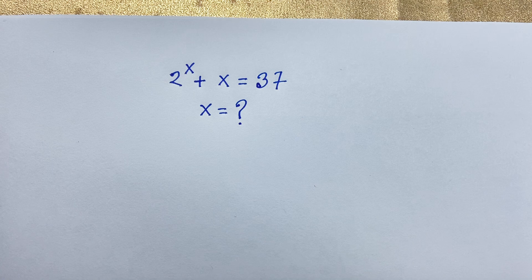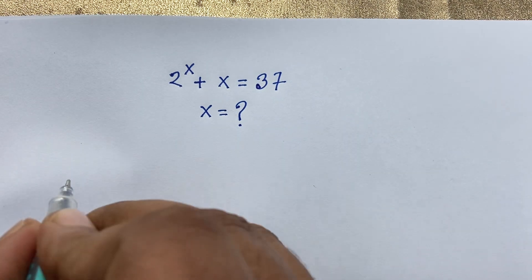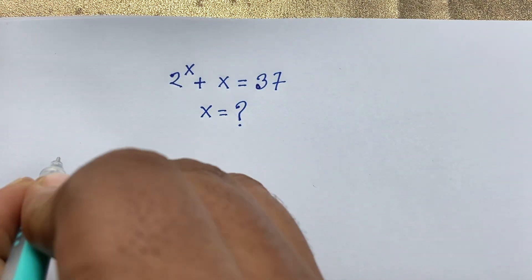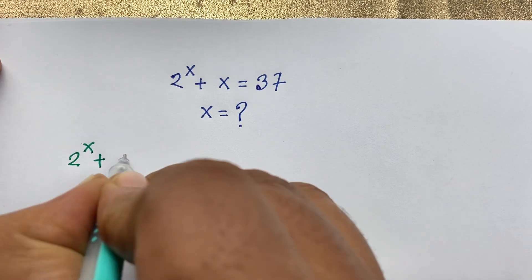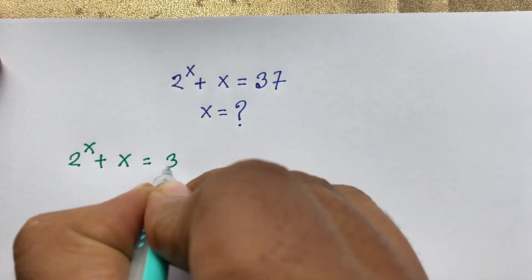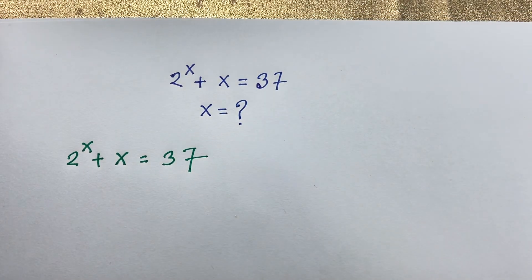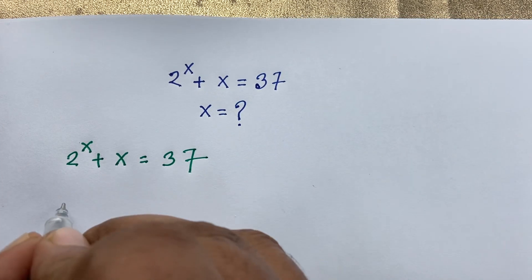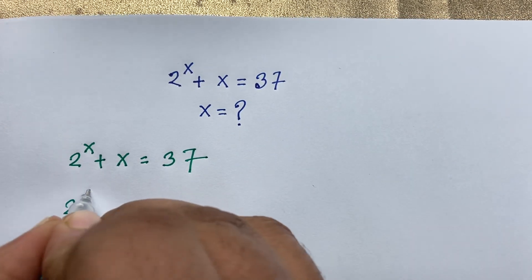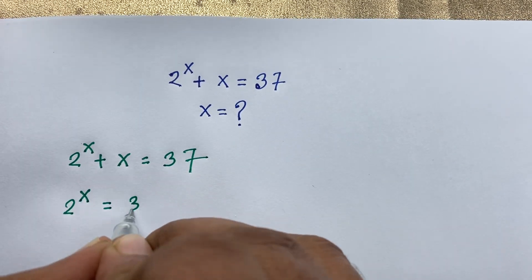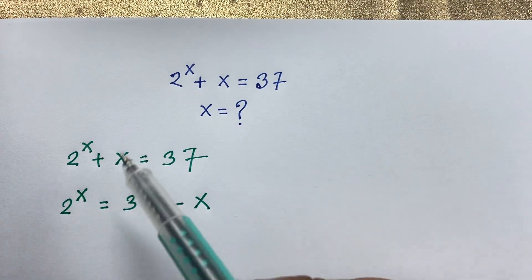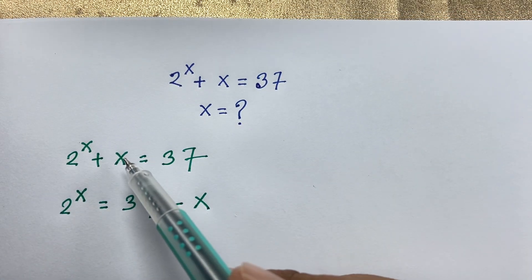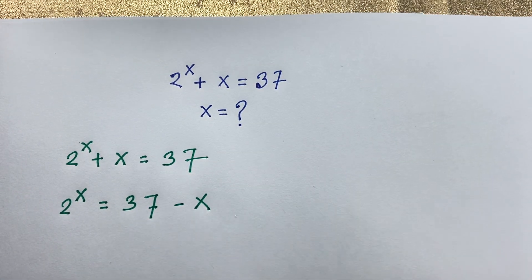Our question is 2 to the power x plus x is equal to 37. Now in this expression, I can rewrite it as 2 to the power x is equal to 37 minus x — I just moved x to the other side to make it negative x.